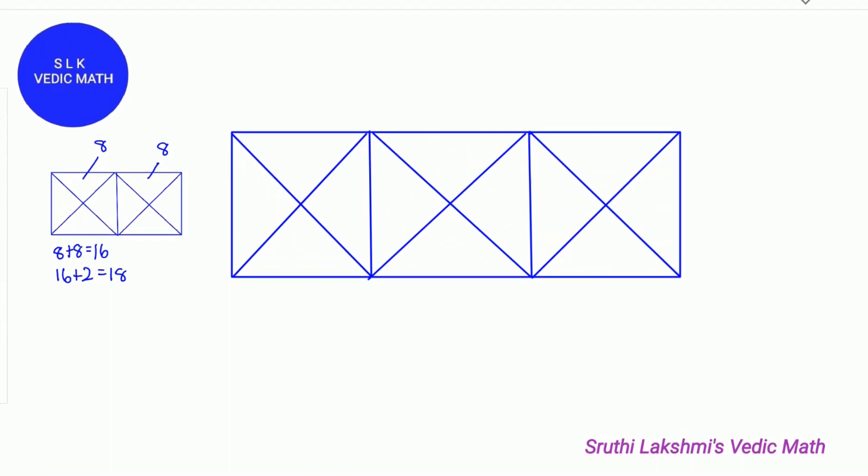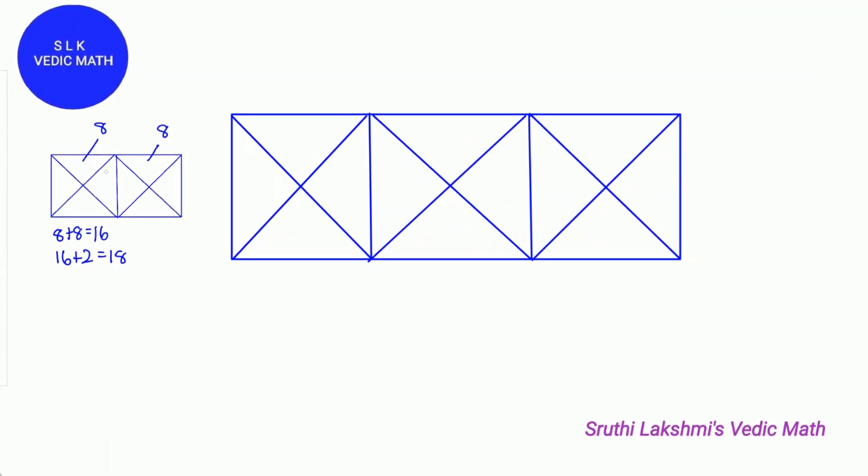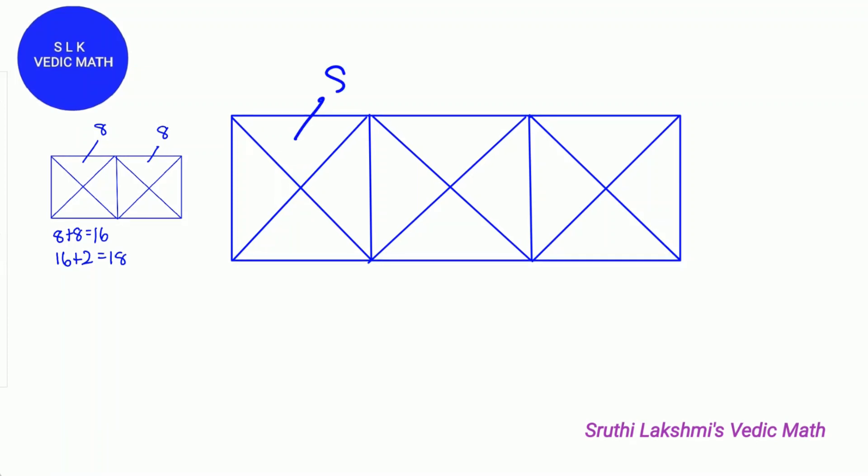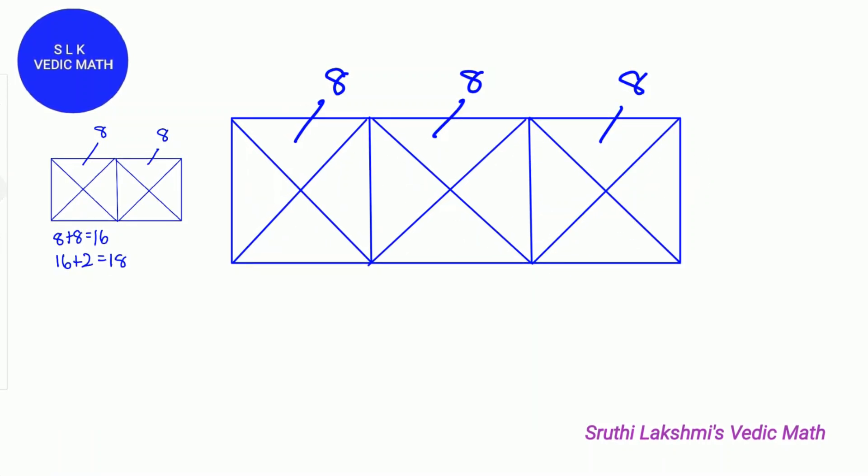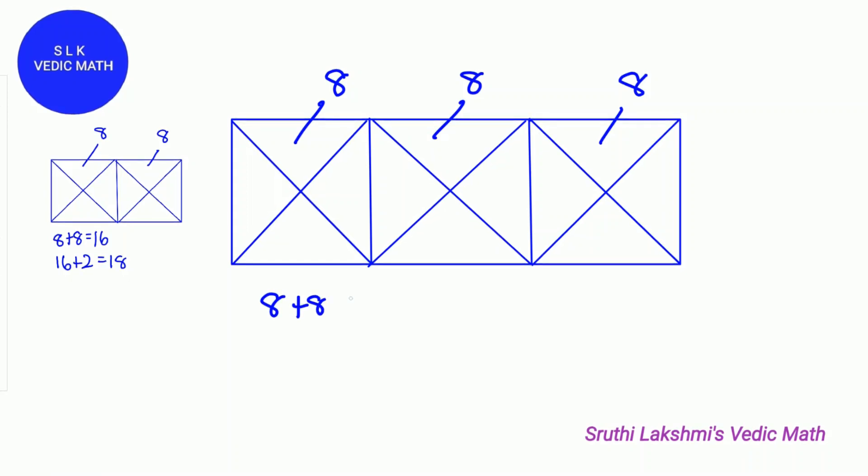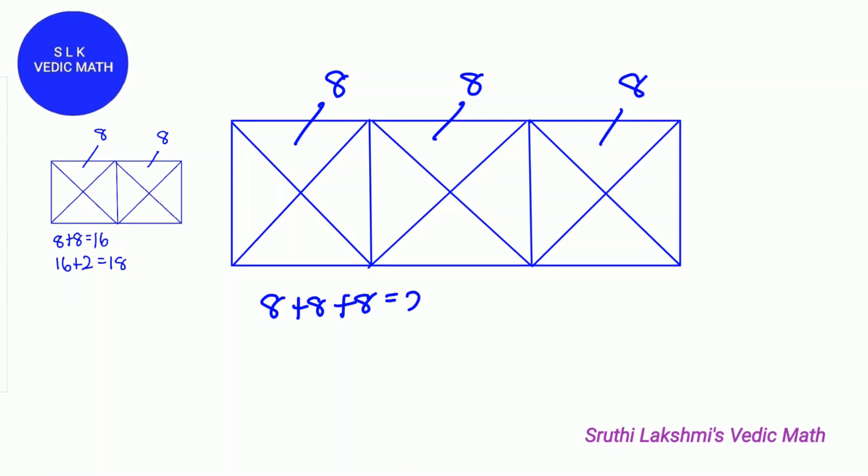This time remember that each square has 8 triangles. So 8, 8 and 8 triangles for each of these squares. Next we add them together. So 8 plus 8 plus 8. 8 plus 8 plus 8 is 24.